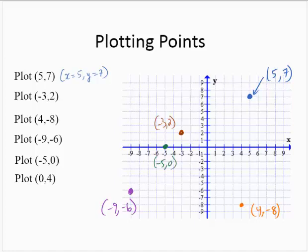(0, 4) says the x-coordinate is 0 — it's tough to see because it overlaps the y-axis — and the y-coordinate is 4. So there's the point (0, 4).